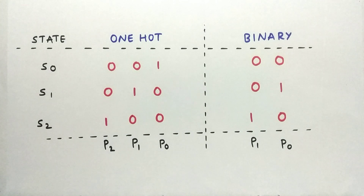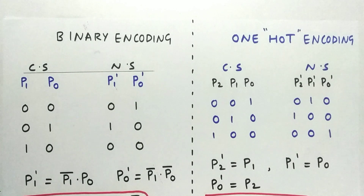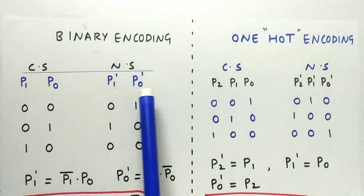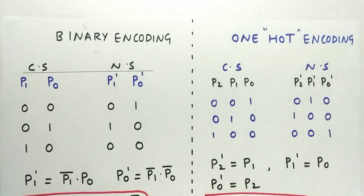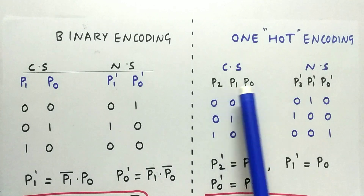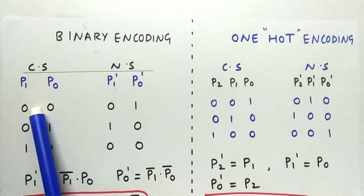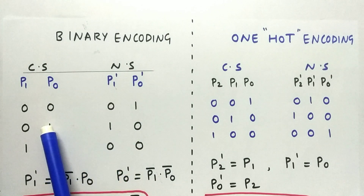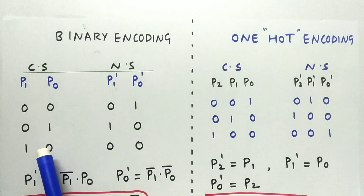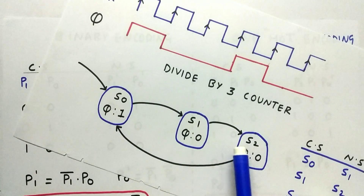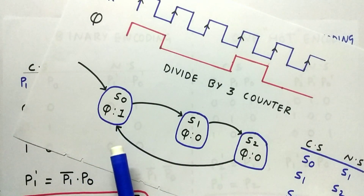Now let's go to the current state and next state representation and design the circuit. I have represented the current state and next state in both encoding schemes. For binary, P1 and P0 are the current state terms, and P1- and P0- are the next state terms — the dash is not for complement, just for representation. For one-hot encoding, I use three variables P0, P1, P2 and P0-, P1-, P2- for the next state. The state machine goes S0→S1→S2→S0, with output Q high only in the S0 state.